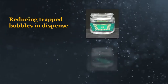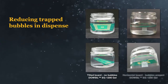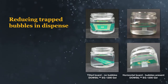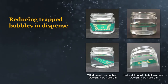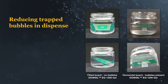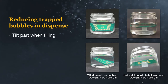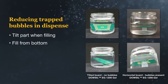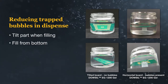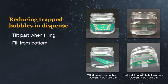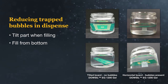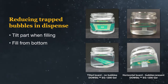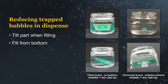Air voids can also become trapped under boards and components during the dispensing process. A technique to prevent this is to tilt the part at an angle during dispense while filling from the bottom. This will allow material to flow and fill the entire space, preventing void formation.